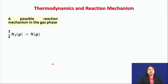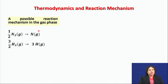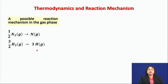A possible gas-phase reaction mechanism at the simplest level: first, ½ mole of N₂ is heated and dissociates into one nitrogen atom. Then 3/2 moles of H₂ are heated, producing three hydrogen atoms.